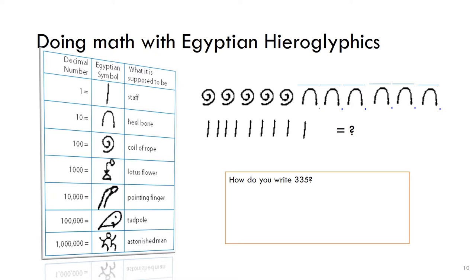It says 100, so let's count: 100, 200, 300, 400, 500. And then there's six heel bones. Let's see what the heel bones are. Let's look on the key, it says that it's 10, so that means 560. And then we have nine staff. Let's see what the staff is on the key, it says one. So we have nine staffs which means that we have 569.